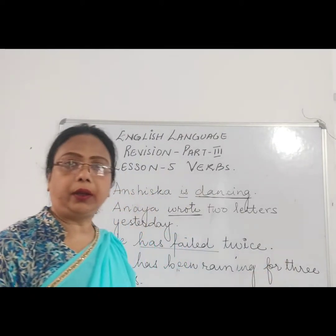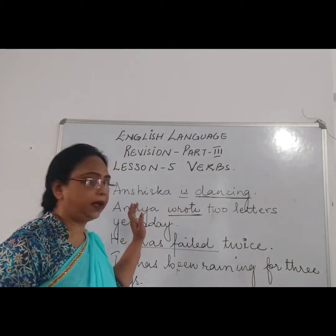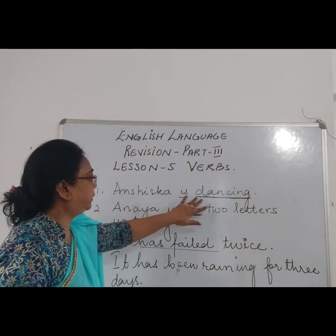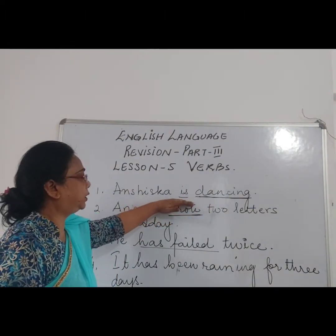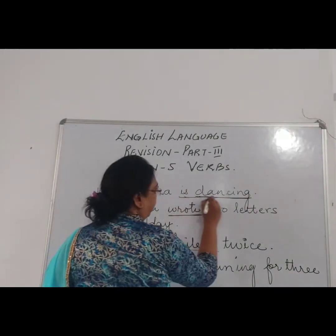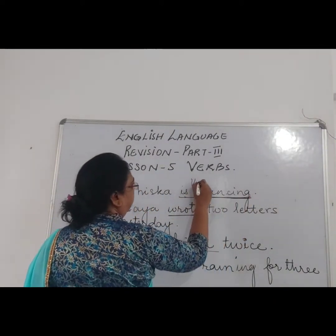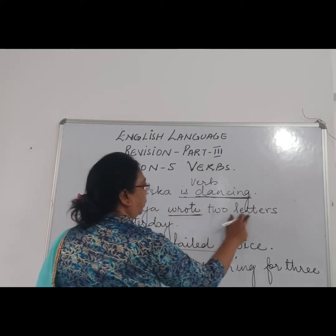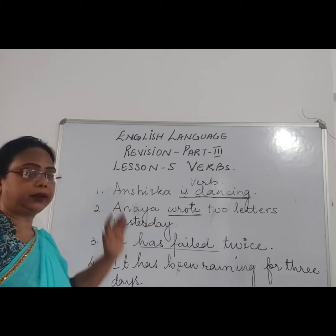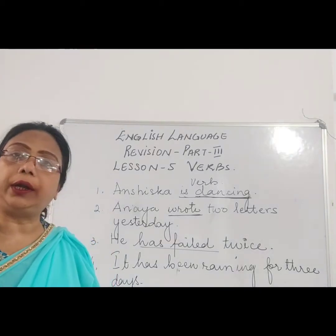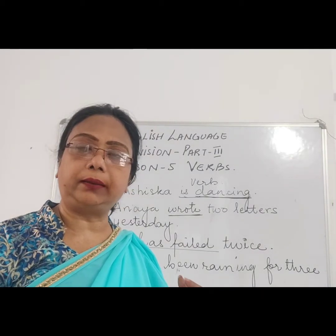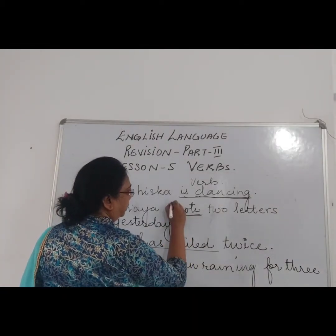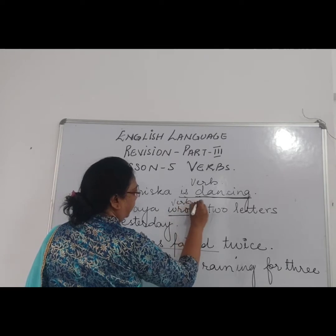I have written a few sentences on the whiteboard. Now let's see what it is. Anshika is dancing. So what is Anshika doing? She is dancing. So 'is dancing' is a verb. Ananya wrote two letters yesterday. This action is stating that she has already done something. What she has done — she wrote. So 'wrote' is the verb here.